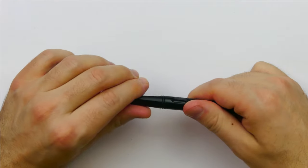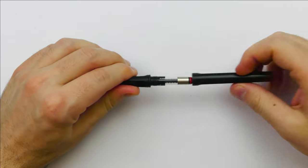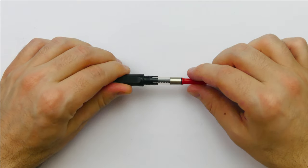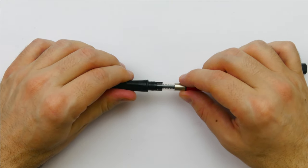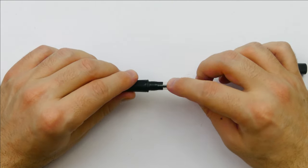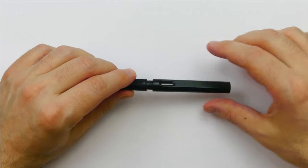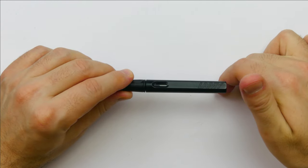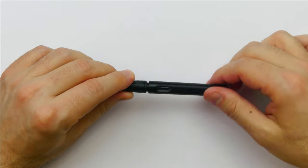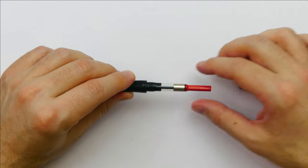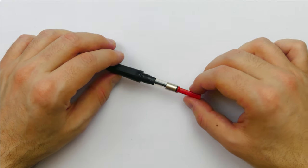You unscrew the barrel and you can see this part of the section where you put the cartridge or converter. If you're using a cartridge, you put it here and then simply twist the barrel down and this will pierce the cartridge. A blue cartridge is provided with the pen.